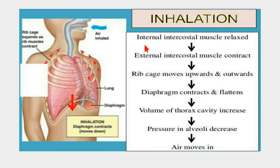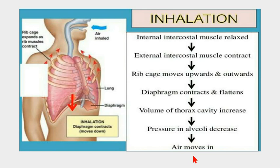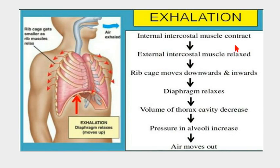To summarize: during inhalation, the external intercostal muscles contract and internal intercostal muscles relax — they act opposite to each other. The rib cage moves upward and outward, the diaphragm contracts and flattens, volume of the thoracic cavity increases, and air moves in. During exhalation, the internal intercostal muscles contract, the rib cage moves downward and inward, the diaphragm relaxes, volume of the thoracic cavity decreases, pressure in the alveoli increases, and air moves outward.